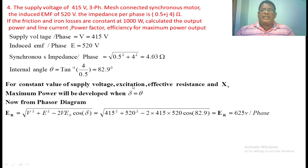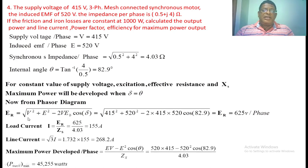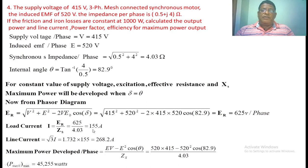For constant supply voltage, excitation, and synchronous reactance, maximum power is developed in a synchronous motor when theta equals delta. From the phasor diagram: ER equals square root of V squared plus E squared minus 2·V·E·cos δ. Substituting all the values, we get ER equal to 625 volts per phase. The current equals this voltage divided by the synchronous impedance, giving 155 amperes as the phase current. Line current equals root 3 times phase current, giving 268.2 amperes.